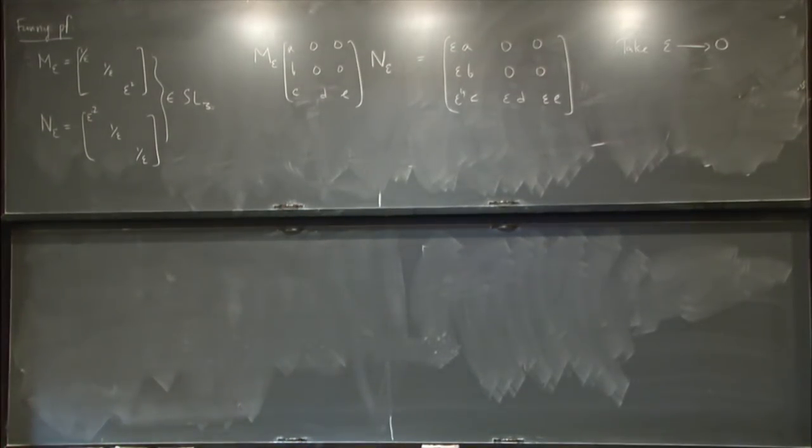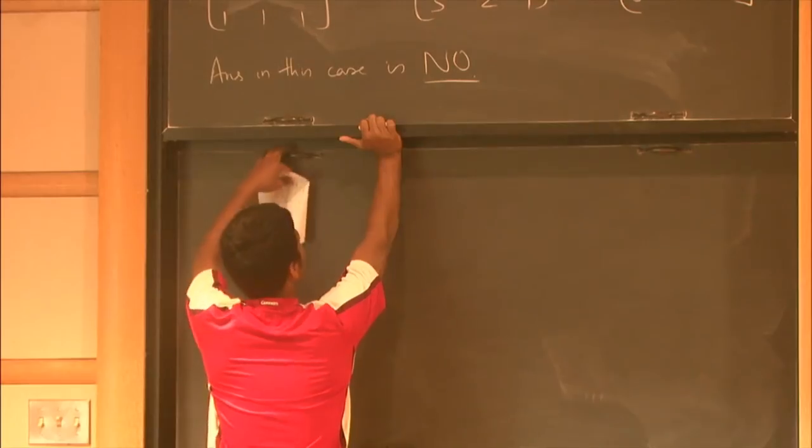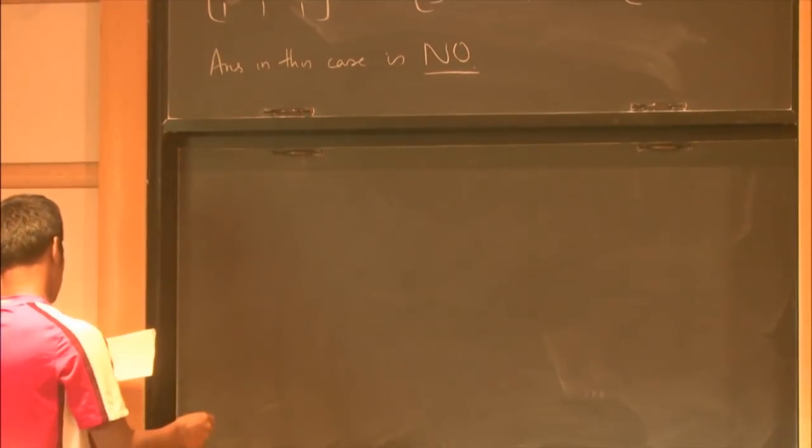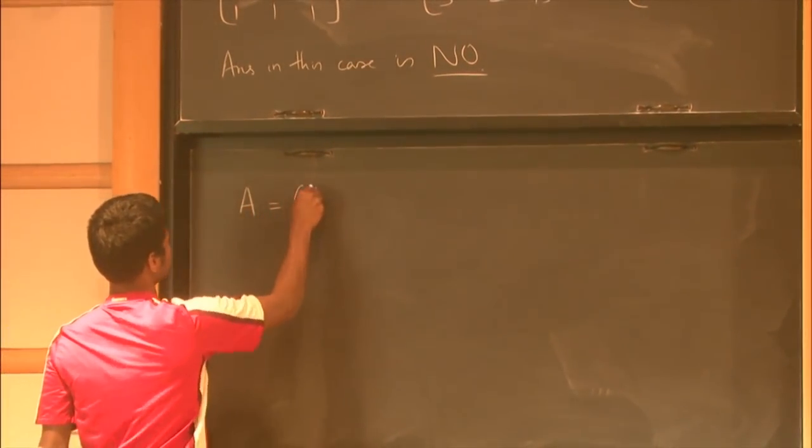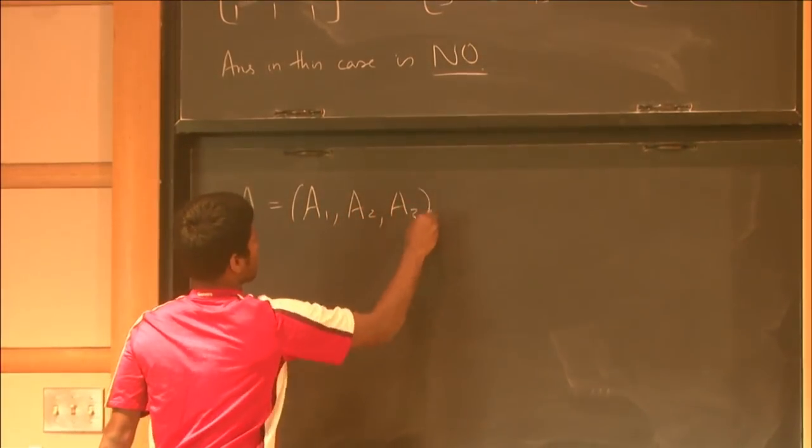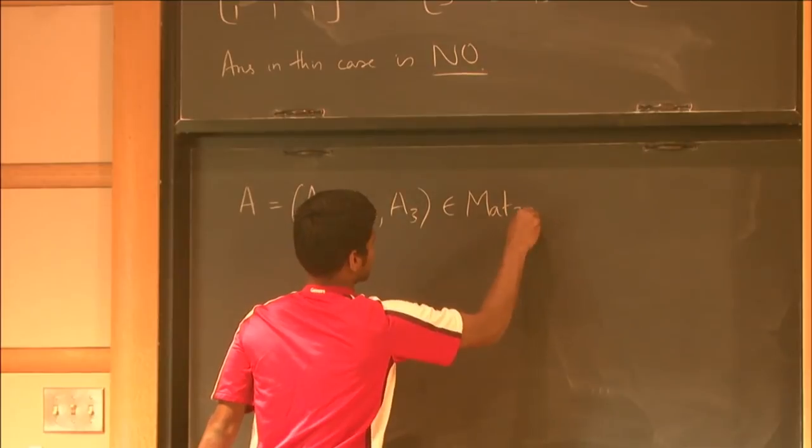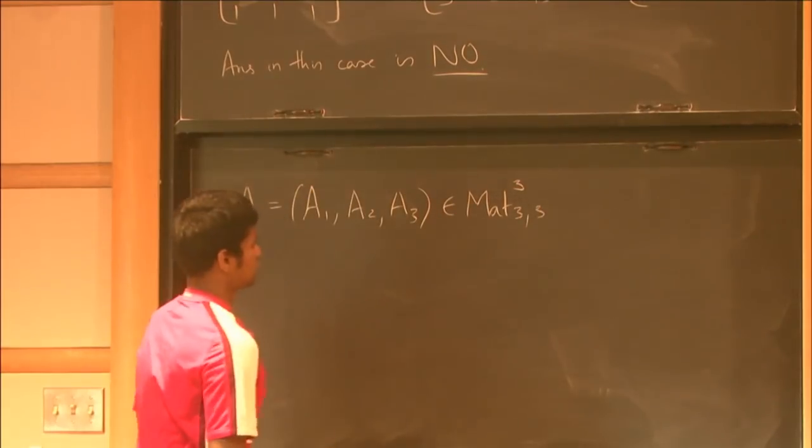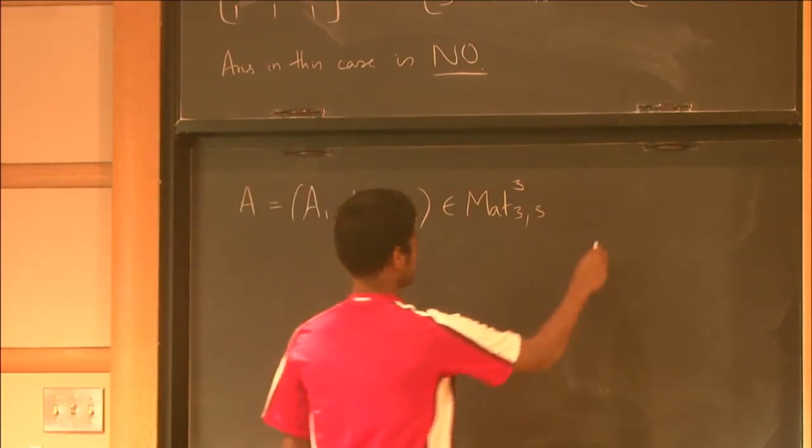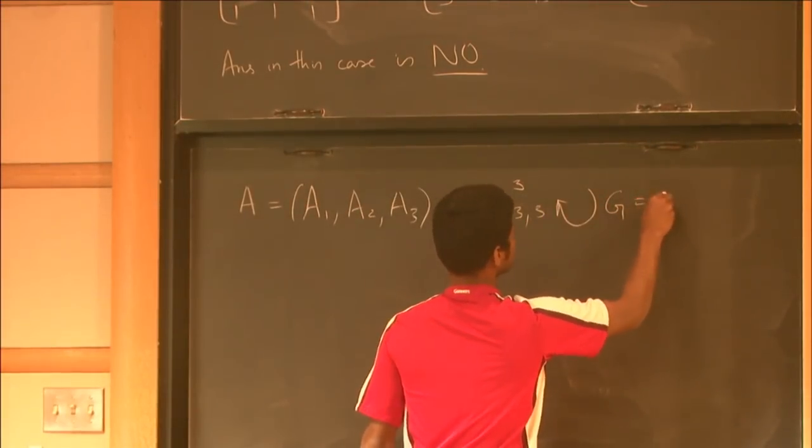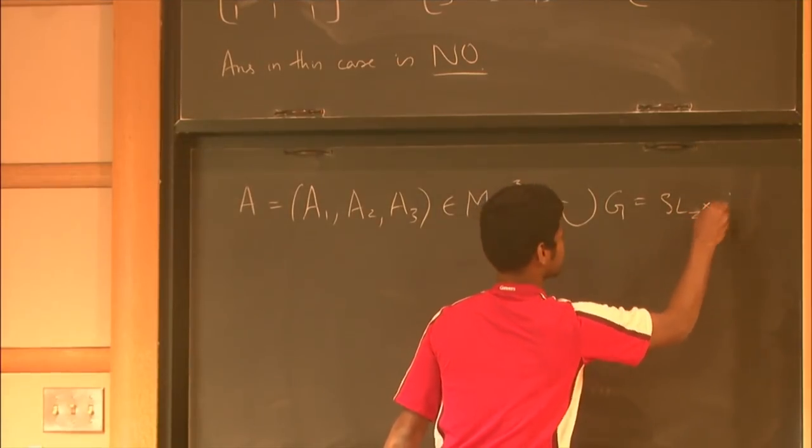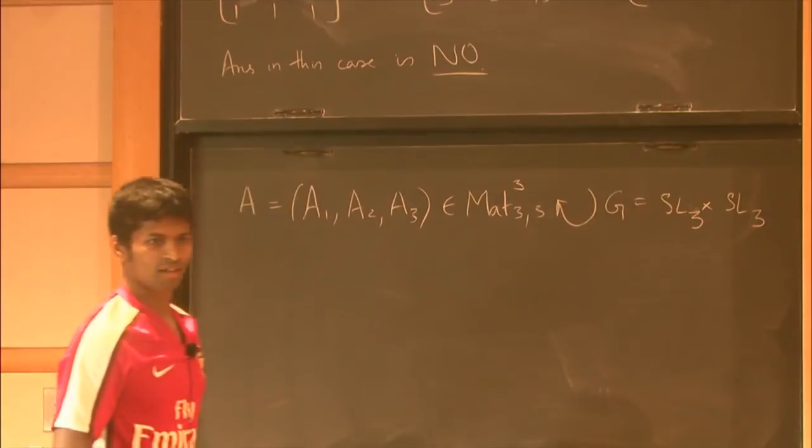So let me kind of rewrite this in a slightly different language. What I said was, let me look at this tuple of matrices. So this is where it resides. So three copies of 3 by 3 matrices. And there's an action of a group on it. And this group is SLN cross SLN. SL3 cross SL3.